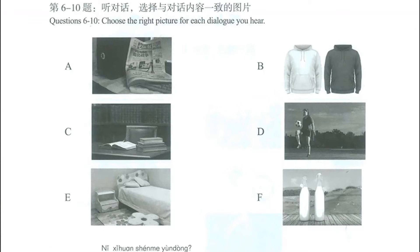This is HSK2, lesson number 3. We are in the wordbook, and we're going to correct page number 22. In this activity, we have different pictures, and we're going to listen to different dialogues. According to what we hear, we need to choose the proper picture for each dialogue. Remember that we cannot use letter D, because this one is used in the example.